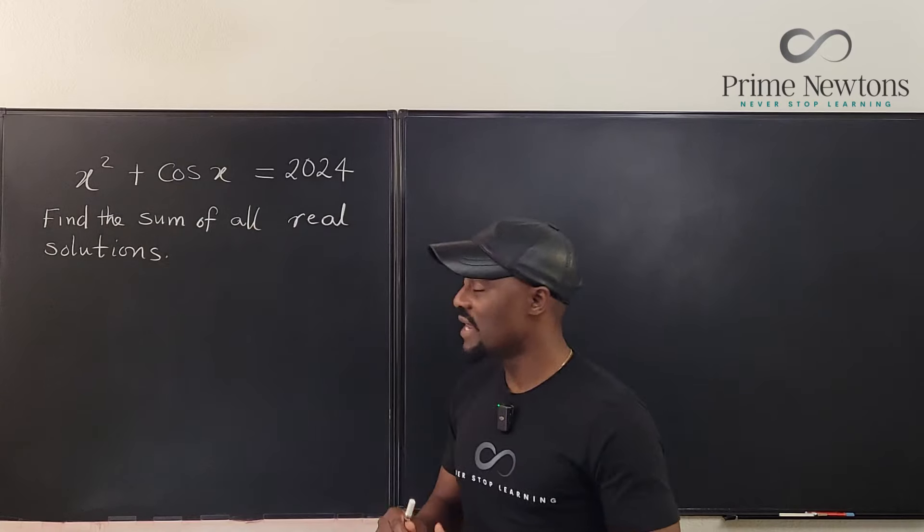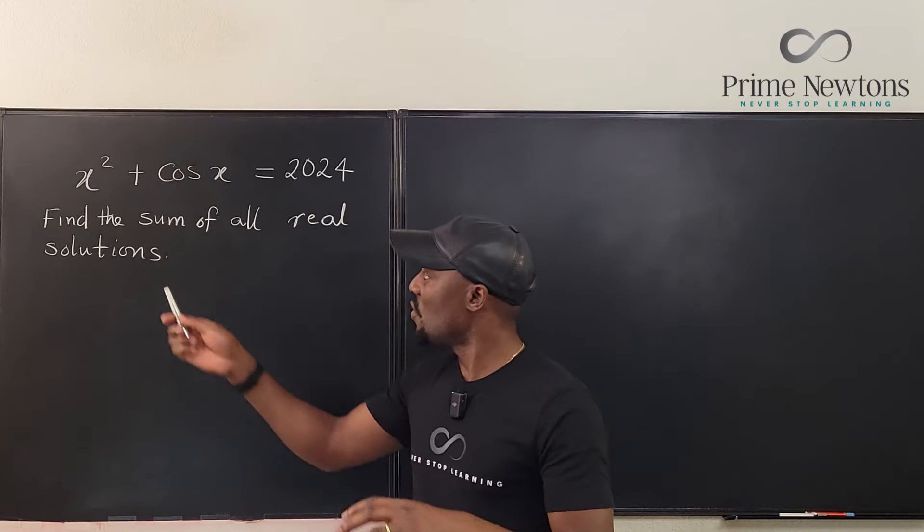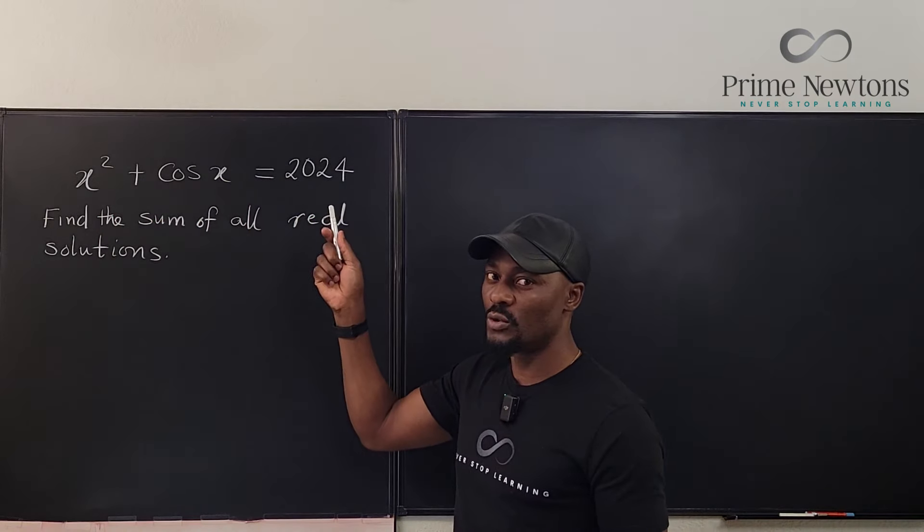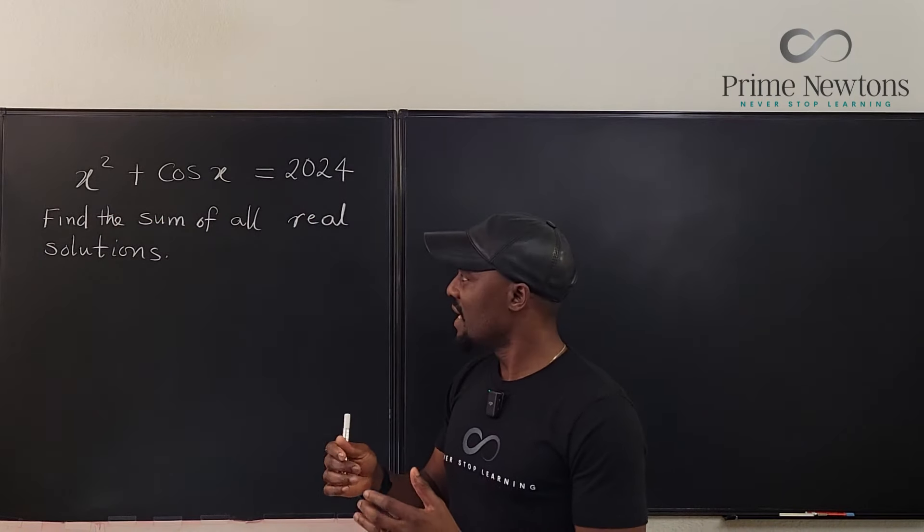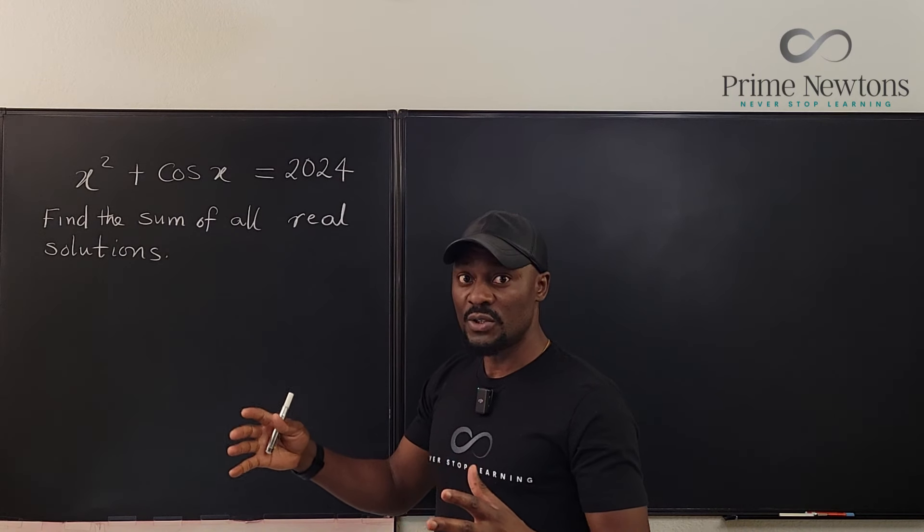So we have an equation that combines a polynomial and a trigonometric function, and you have x squared plus cosine x is equal to 2024.